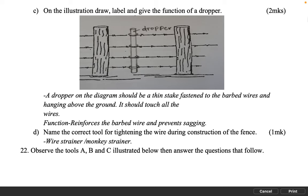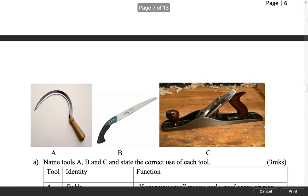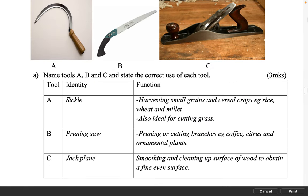Name the correct tool for tightening the wire during construction of the fence. 1 mark: Wire strainer or monkey strainer. Observe tools A, B and C illustrated below then answer the questions that follow. Name tools A, B and C and state the correct use of each tool. 3 marks. A: Sickle — harvesting small grains and cereal crops e.g. rice, wheat and millet; also ideal for cutting grass. B: Pruning saw — pruning or cutting branches e.g. coffee, citrus and ornamental plants. C: Jack plane — smoothing and cleaning up the surface of wood to obtain a fine even surface.